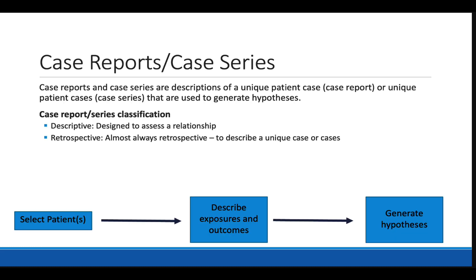Finally, we arrive at the study designs with the lowest level of evidence: case reports and case series. These are simple descriptions of unique patient cases in the clinical setting. A case report is a description of a single patient case, whereas case series involve more than one patient case. For example, early cases of Pneumocystis jirovecii pneumonia were originally described in patients with very low white blood cell counts, and these cases were written up and eventually PJP pneumonia was linked to AIDS patients. Because this was recognized early, we now regularly treat patients with antibiotics before they develop this condition.